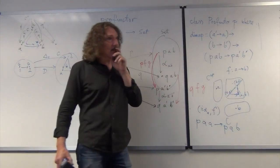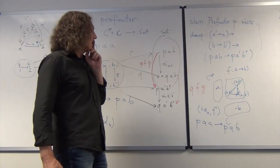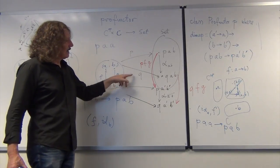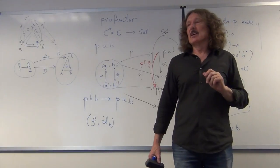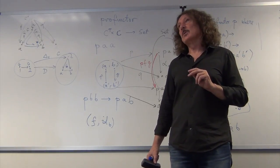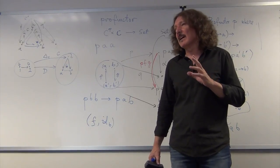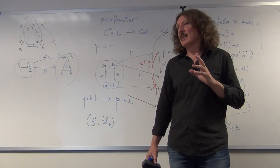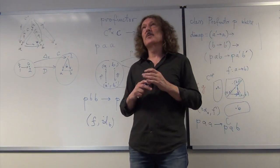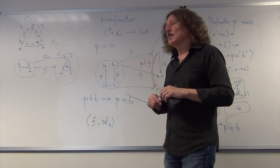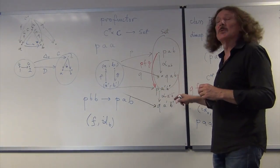This means maybe I can simplify natural transformations to be defined only on the diagonal — something like a transformation between diagonal elements P(A,A) to Q(A,A).